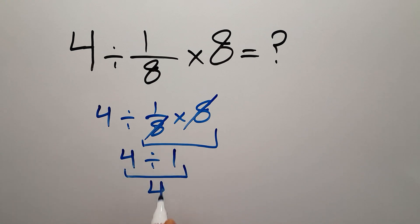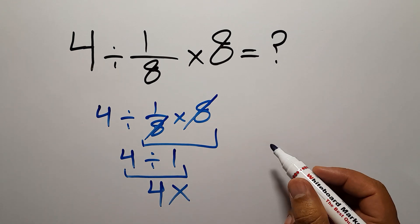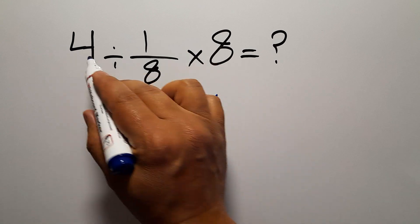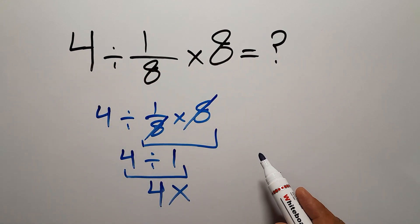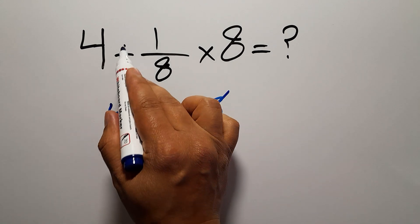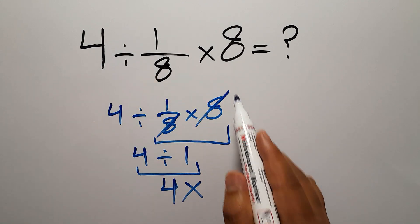But this answer is not correct because according to the order of operations, multiplication and division have equal priority and we have to work from left to right. So first we have to do this division, not this multiplication.